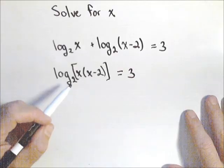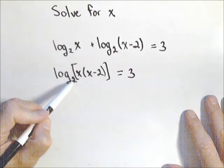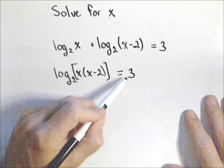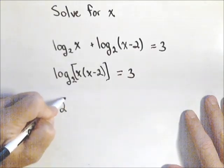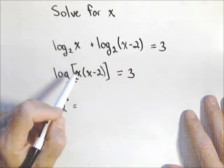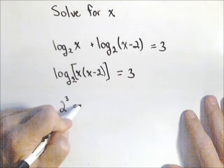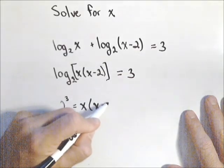Now we can rewrite this as an exponential. The base to the exponent, so two to the three, equals what we're taking the log of. So x times x minus two.